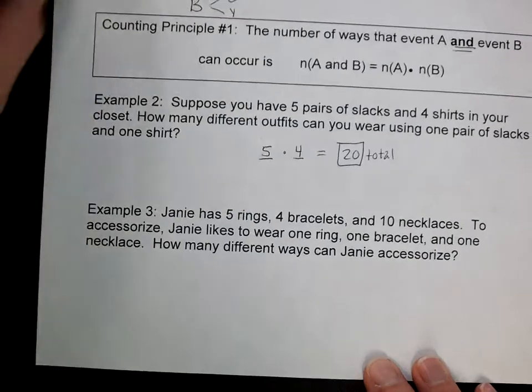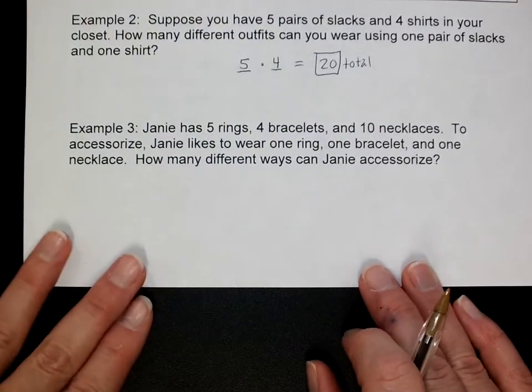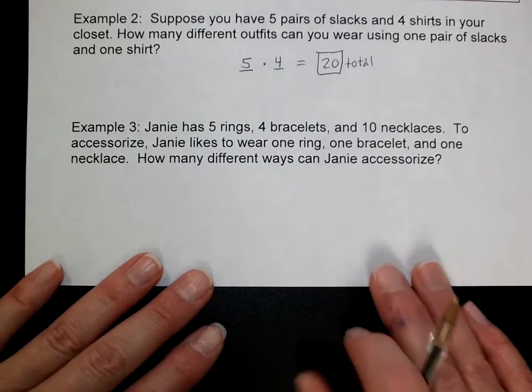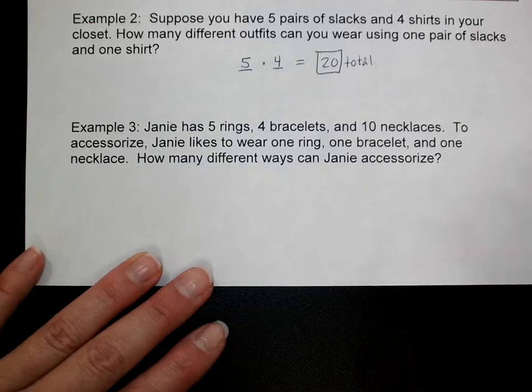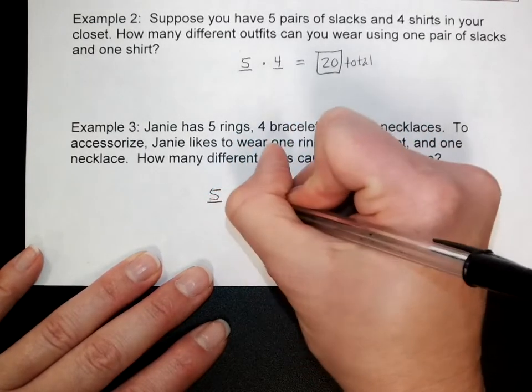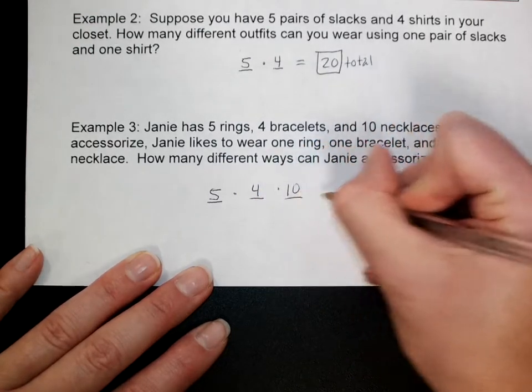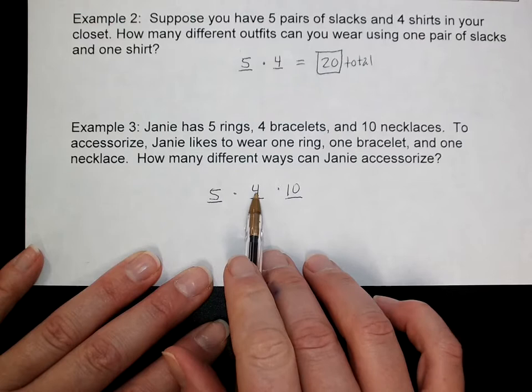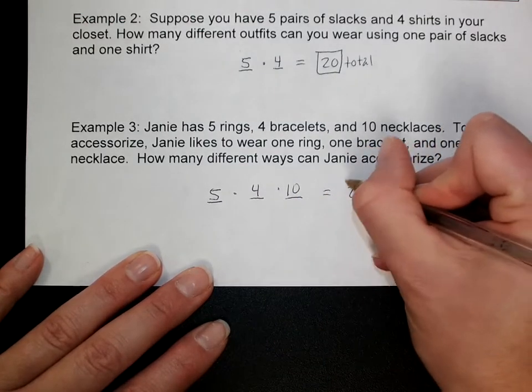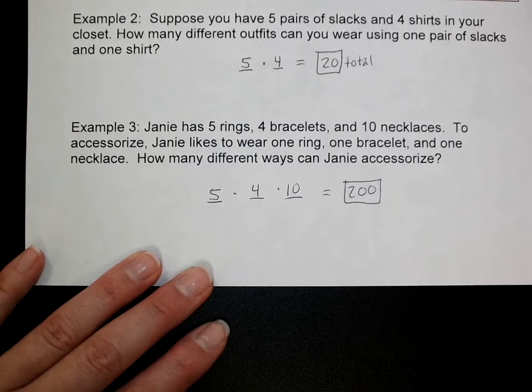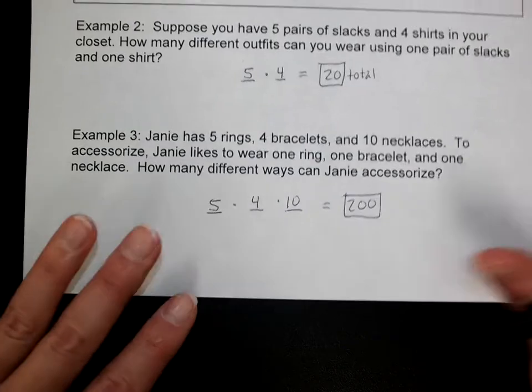Kind of same thing here. She has five different rings, four bracelets, ten necklaces to accessorize with. She wears one ring, one bracelet, and one necklace. How many different ways can she accessorize? How many possible rings? Five. How many possible bracelets? Four. And how many necklaces? Ten. When you multiply those, five times four is 20, twenty times ten is 200 different possibilities. You definitely wouldn't want to draw out a tree diagram for this, even though you could if you had enough paper and patience.